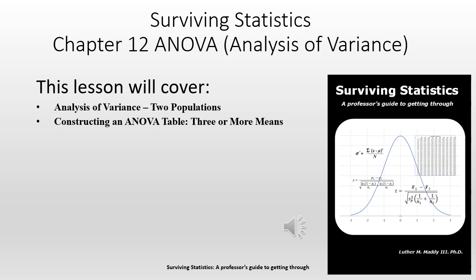In chapter 12 we'll be discussing the ANOVA, which is an analysis of variance. We'll be able to compare the variance of two populations. We'll also learn how to construct an ANOVA table that will allow us to compare three or more means, and we'll learn to do it manually but also in Excel.